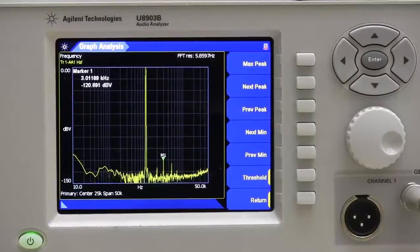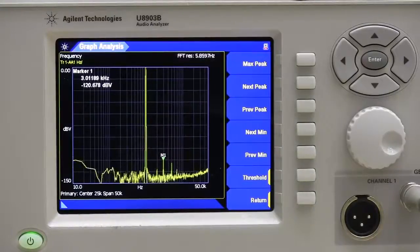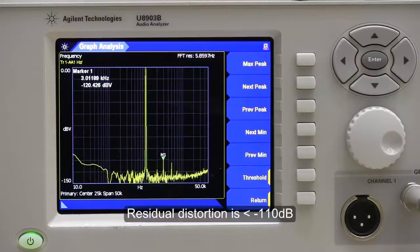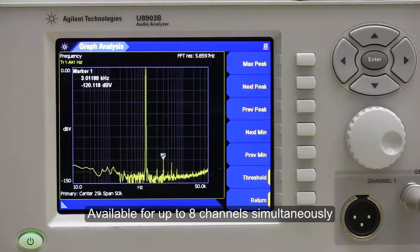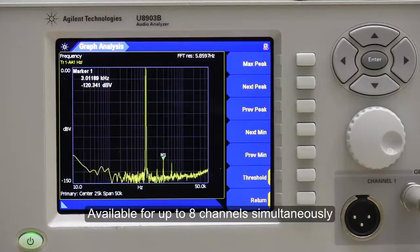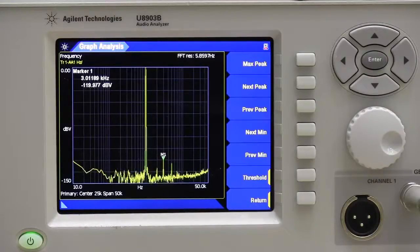The U8903B comes with extremely low residue distortion and noise. The residue distortion is less than negative 110 dB, enabling the measurement of the most demanding devices. This performance is available for up to 8 channels simultaneously. As you can see here, this is an FFT plot showing the residue distortion.